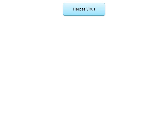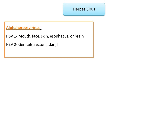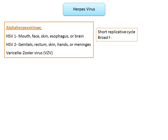Of the more than 100 known herpes viruses, eight routinely infect only humans, divided into three groups. The alpha herpesvirinae include herpes simplex virus type 1, which typically causes diseases of the mouth, face, skin, esophagus, or brain; herpes simplex virus type 2, which causes infections of the genitals, rectum, skin, hands, or meninges; and varicella-zoster virus, which causes varicella and zoster. The alpha herpesvirinae are characterized by a short replicative cycle, induce cytopathology in monolayer cell cultures, and have a broad host range. They are the neurotropic viruses.